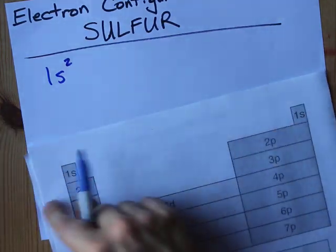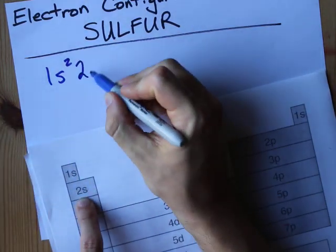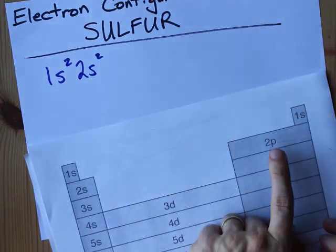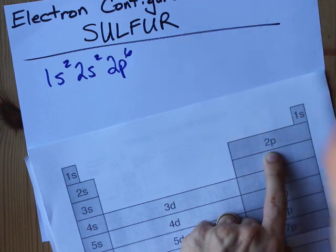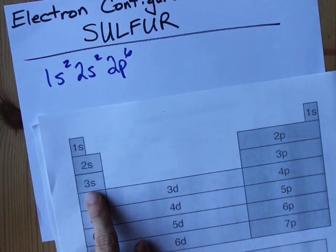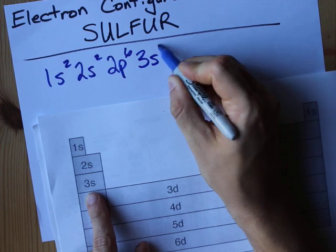Then next is 2S. I'm reading it like a book. 2S2. Next you go all the way through 2P, but you can fit six electrons in a P subshell. Next you have 3S. That's 3S2.